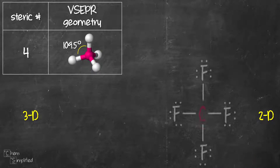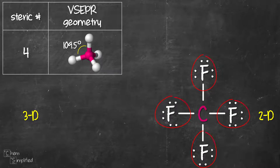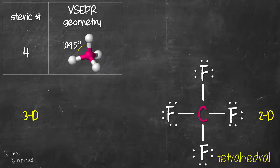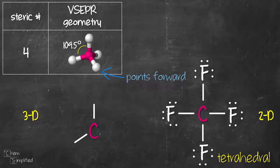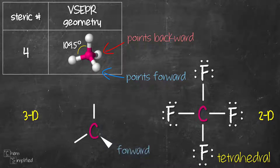Moving on to steric number 4, we have CF4 as an example. Since we have four groups surrounding the central atom, each will be as far apart from one another at equal distance, turning out to be 109.5 degrees — this arrangement is called tetrahedral. To draw CF4 in 3D, we start with carbon in the center and draw out four bonds. The first two are solid lines showing bonds on the same plane as the screen. For the remaining two bonds, one points to the front of the screen — shown with a solid wedge — and the other points behind the screen — shown with a dash wedge.